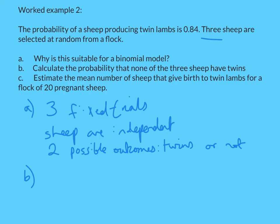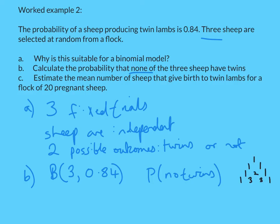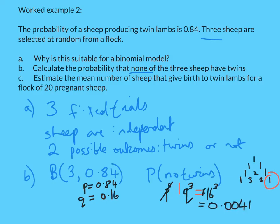Part B: let's write it as binomial. B(3, 0.84) — three trials, probability of success 0.84. Part C asks for the probability that none of them have twins. I've got three sheep, so I use Pascal's triangle up to the third row. I want no P at all, so it's going to be Q cubed. The coefficient for Q cubed is just 1. Q is 1 minus 0.84 = 0.16. So the probability is 0.16 cubed, which gives a very low probability.